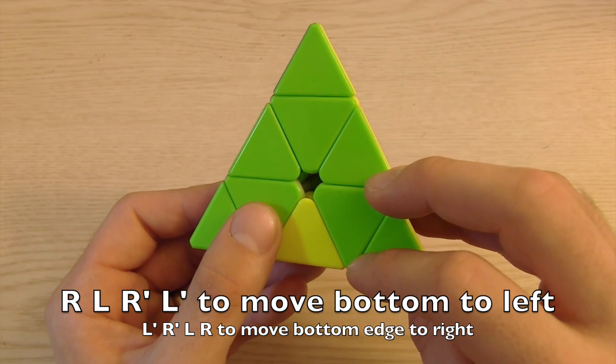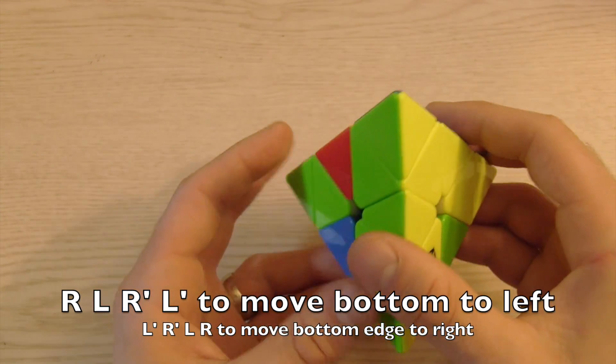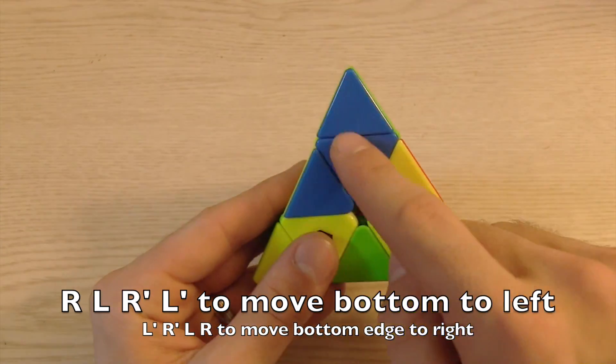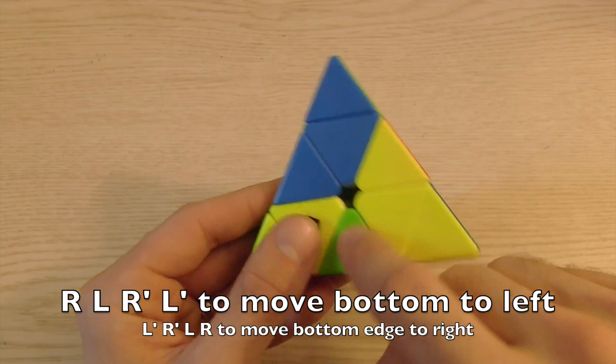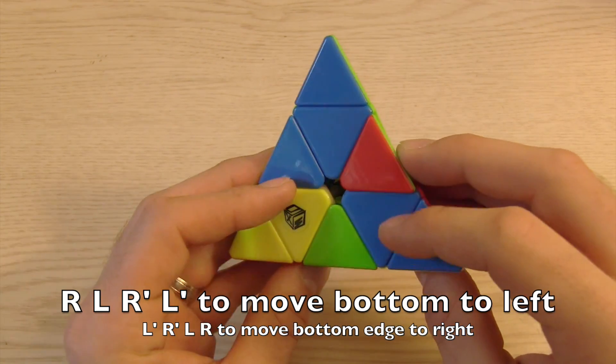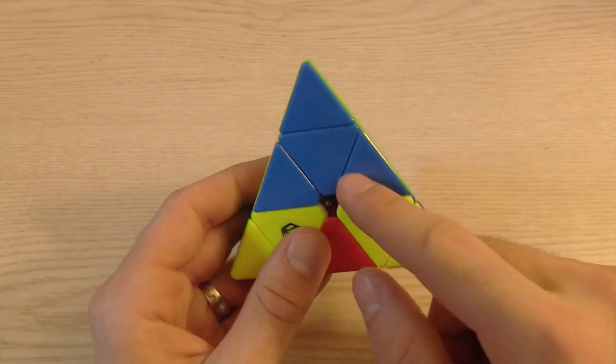Now let's say it was like that but you had green green. You will want to put blue in front, so they're opposite, and just do the opposite of that. It's L' R' L and it moves it in.